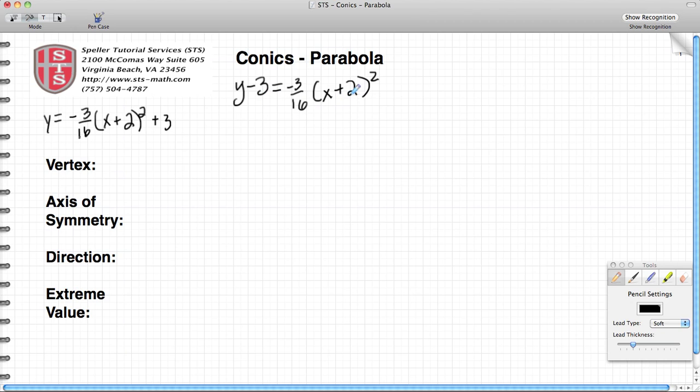The vertex is going to be negative 2, positive 3. And notice how I took the opposite sign for the numbers that I'm using here. So vertex: negative 2, positive 3.